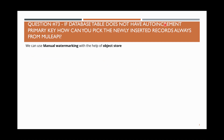Next question: if a database table does not have an auto-increment primary key, how can you always pick the newly inserted record from Mule? In MuleSoft, we have automated watermarking. When you use 'On Table Row', there is a watermark column where you specify a primary key, so whenever a record is picked it automatically stores that value and on the next run it picks data from the latest watermarked point.